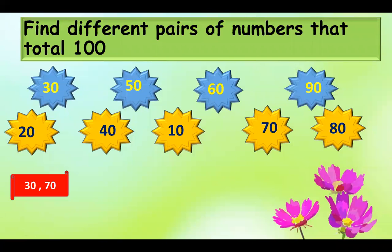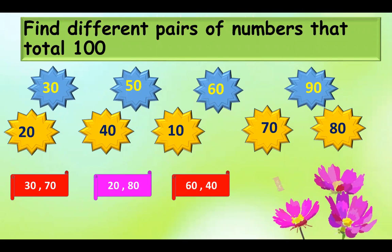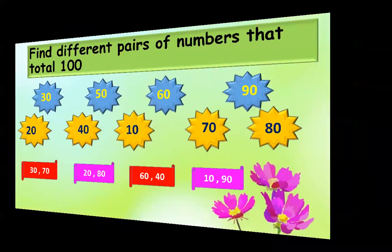The first pair of numbers is 30 and 70. Next is 20 and 80. Next is 60 and 40, 10 and 90.